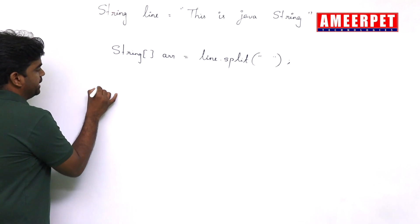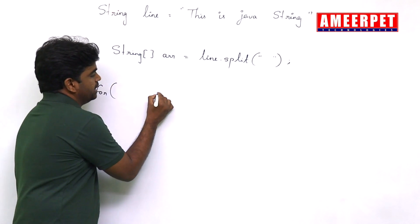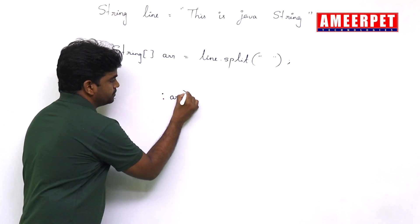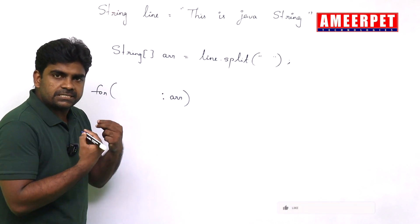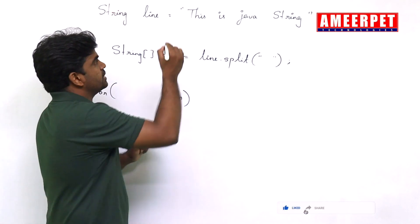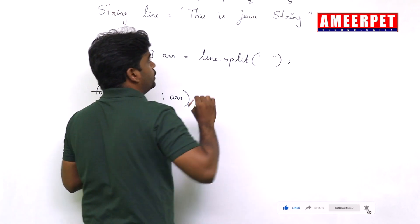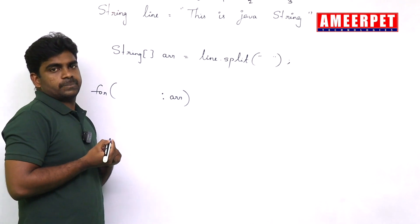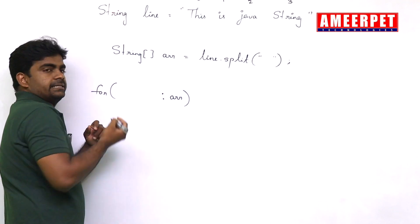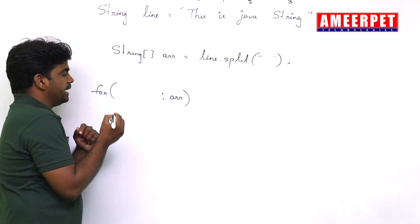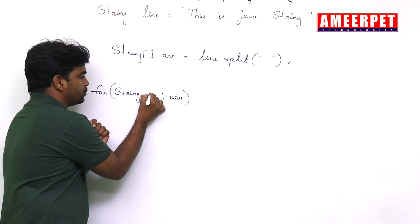If you want to display all strings one by one, a for-each loop is easy. Here we are passing this array as an input — an array of strings. It will give each string: zeroth location string, first location, second location, third location — each string you will get.